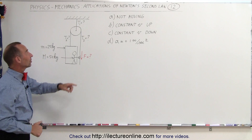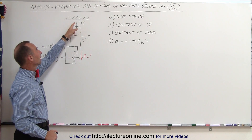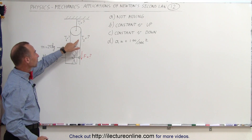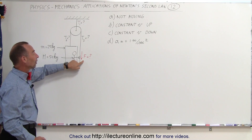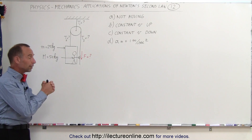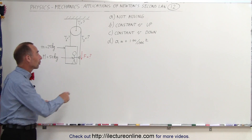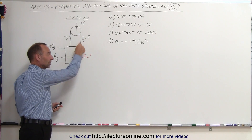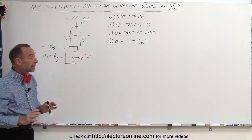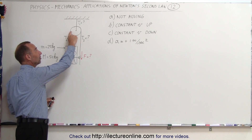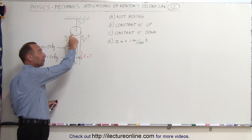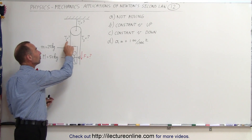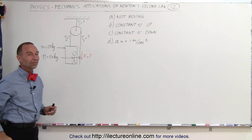The question is: what is the tension between the cable, the pulley and the ceiling — the tension on the left side, the tension on the right side, and what is the force required by the person to hold on to that cable? The force should be the same as the tension on that side, because it's the same cable. With a massless, frictionless pulley, the tension on both sides of the pulley should also be the same.